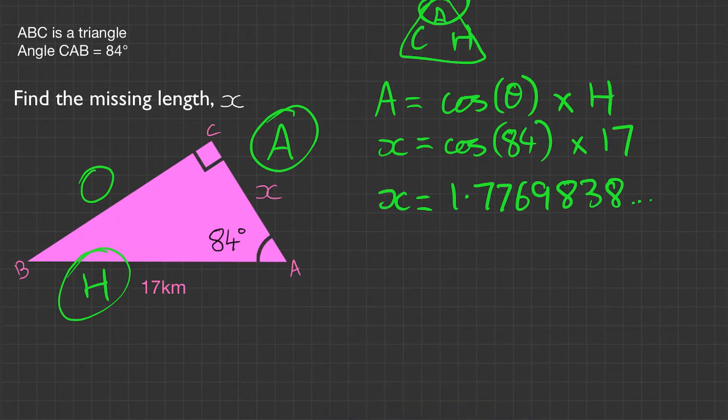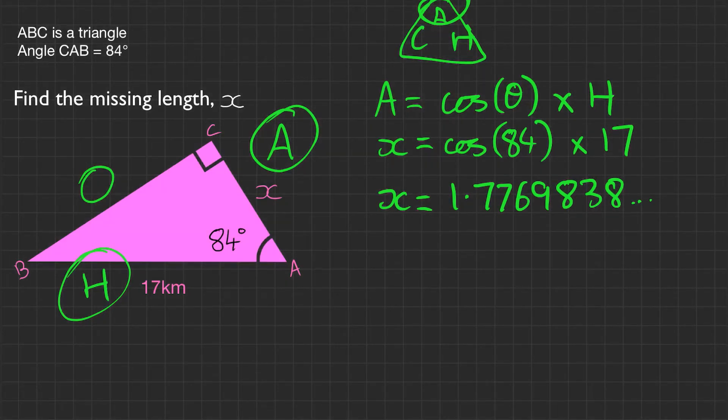Now again, because it's not stated how many decimal places or significant figures to round to, we're going to assume it's two decimal places. Again, check the front of the exam paper. So if we're rounding this, it's going to be x equals 1.78 kilometers. Remember those units, really important. You can lose marks without them. That's our final answer. Just to double check, find the missing length x equals 1.78 kilometers. That looks about right. And that's it, we've done that question.